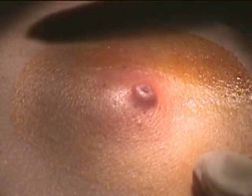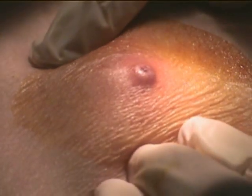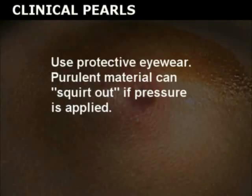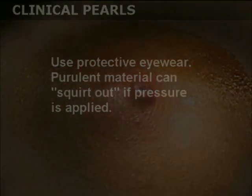Prep the abscess area with povidone-iodine or alcohol. Carefully palpate the abscess to accurately determine the size and location. Use protective eyewear, as purulent material can squirt out if pressure is applied.